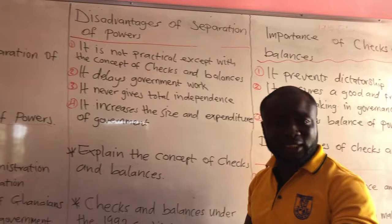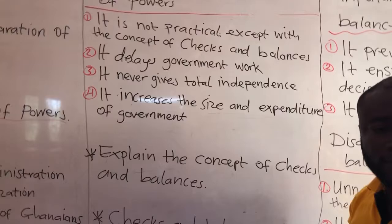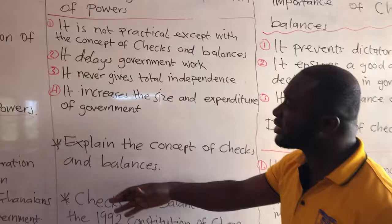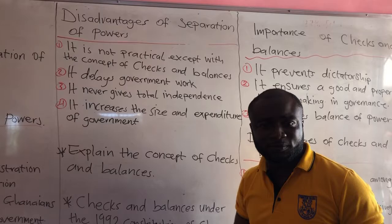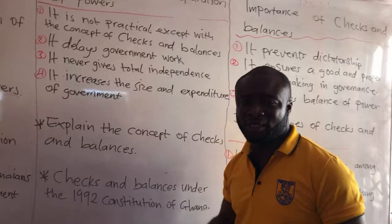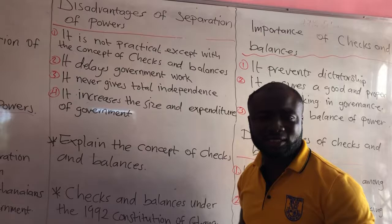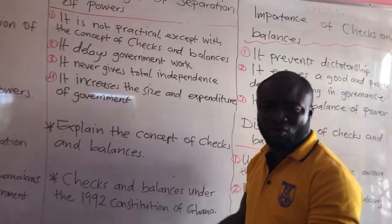Another disadvantage is that it never gives total independence. The concept says that all three arms of government work independently of each other, but in reality that is not true. For example, the executive nominates ministers, and they are voted on and approved by parliament. So in context, the executive is not totally independent.